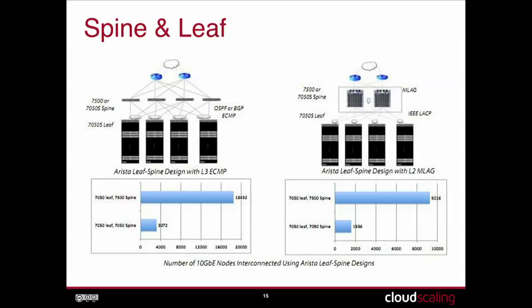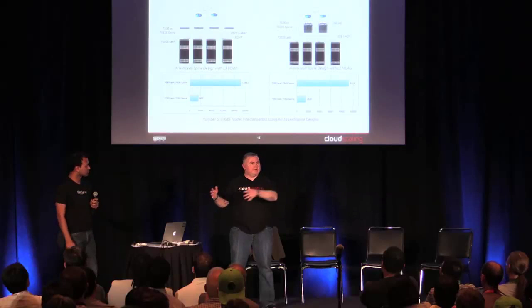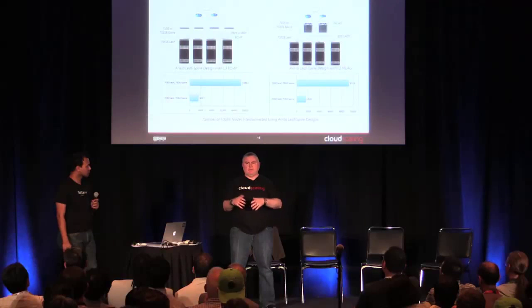Our physical network topology is derived from the spine and leaf model that Arista popularized a few years back. The spine and leaf model has a network of routers which forms the spine, and then top-of-rack switches on the other end which form the leaves. The most awesome thing about this model is that you can increase scalability by horizontally adding more routers and more top-of-rack switches and nothing breaks.